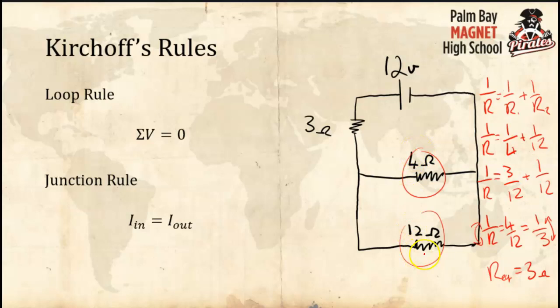Now I know those two parallel resistors act like a single 3-ohm resistor. Conveniently, the series resistor is also 3 ohms. So the total resistance is 3 plus 3, which equals 6 ohms. The equivalent resistance of the whole circuit is 6 ohms.